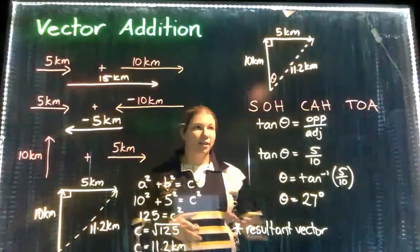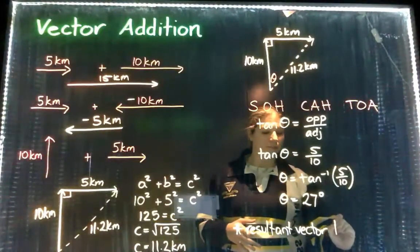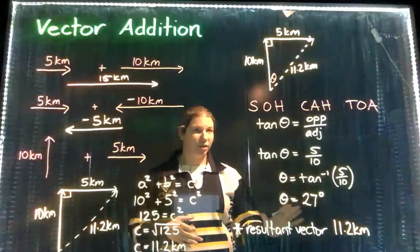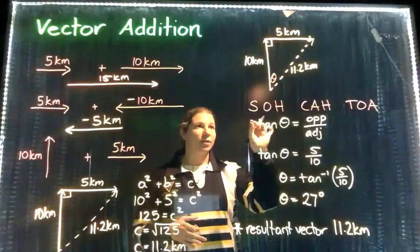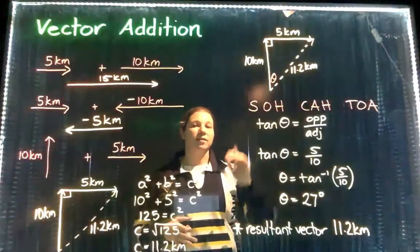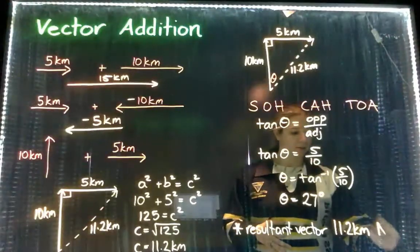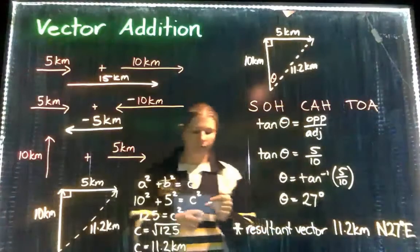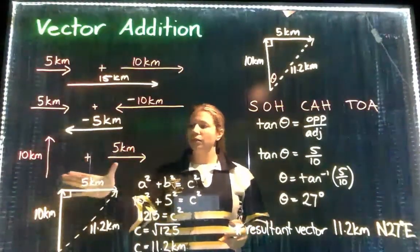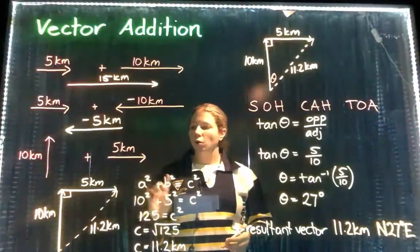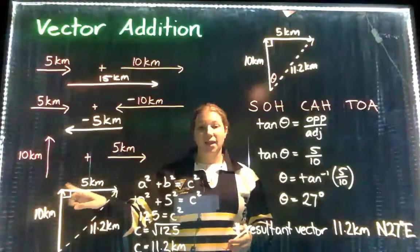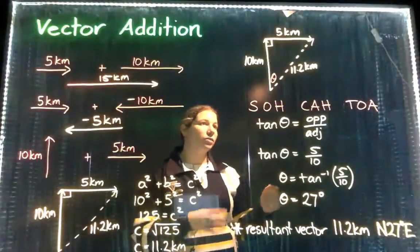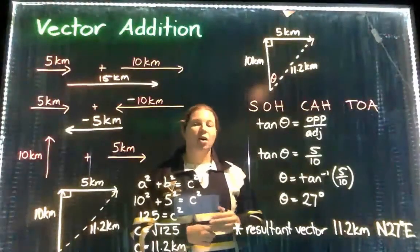The resultant vector is equal to 11.2 kilometers - that's just the magnitude. Now we need the direction. The direction is from north 27 degrees towards the east. That's how if we have two vectors that can be put together in a right angle triangle, always remembering to attach the head to tail of the two vectors, then we can work out the magnitude using Pythagoras and we can use trigonometry to work out the direction of the vector.